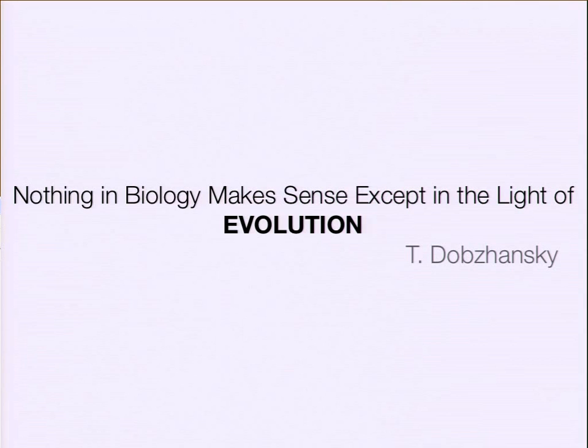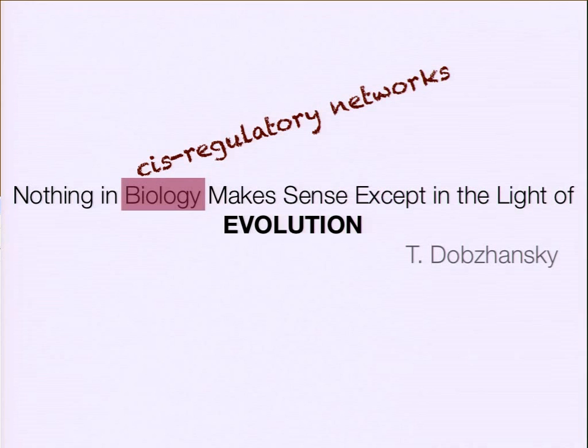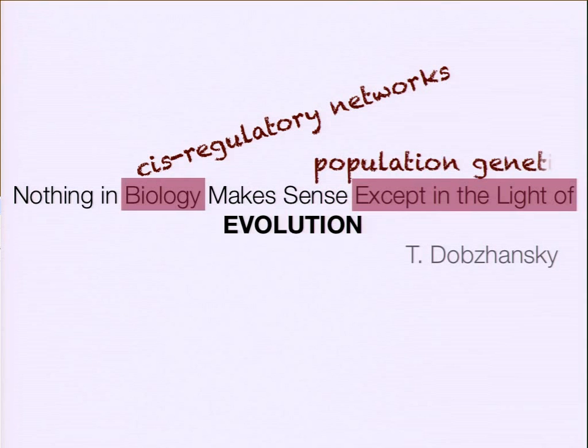Today I'm going to tell you a story about evolution. The moral of this story is that nothing in biology makes sense except in the light of evolution. The type of biology I'm going to be talking about is called the cis-regulatory network, and I'm going to look at it from an evolutionary perspective using population genetics. I call this extension population regulomics.